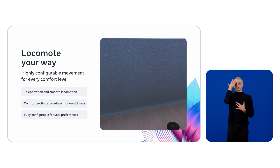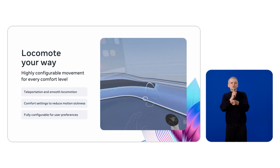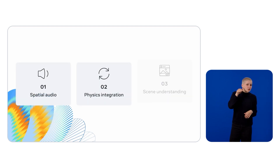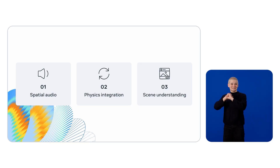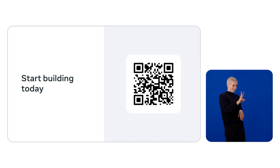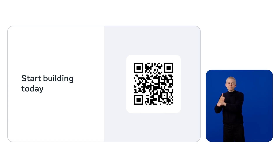The locomotion system is performant and fully configurable. We've also built in comfort features like vignetting with adjustable intensity levels to reduce motion sickness — everything can be tweaked to match your user's preferences. And these are just the beginning. You can try our systems for spatial audio, physics integration, and scene understanding today, with more to come very soon. These production-ready systems let you build rich, interactive experiences without reinventing the wheel. We've gone from a simple web page to a fully immersive product configurator with visual scene composition, spatial UI, grabbing interactions, and locomotion — all in just 10 minutes.